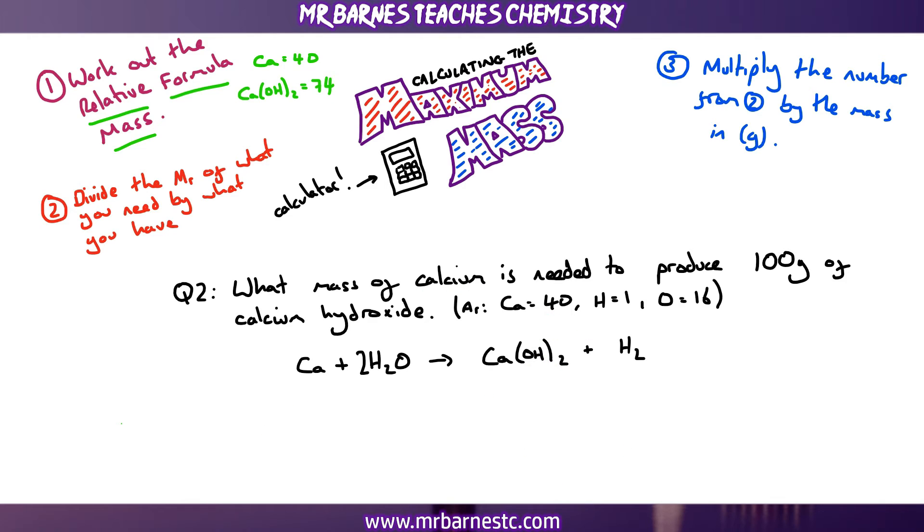Stage 2, divide the MR of what you need. So this time, we need the calcium. We don't need the calcium hydroxide. We've been given that. So the thing that I put to begin with is 40. That's the atomic mass, my MR for calcium. Then it's by what I have. Now I was given the information for calcium hydroxide. So that's what I put below. So 40 divided by 74, which comes out to 0.54. So that's my second mark.